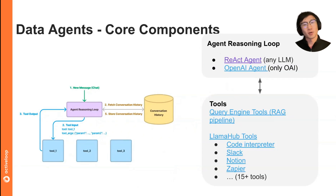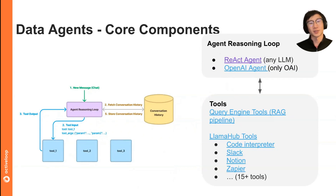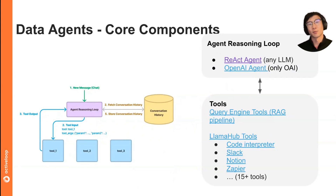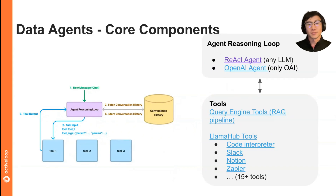The way we think about data agents, the core components are threefold. First is the agent reasoning loop — this could be ReAct, which is a popular chain-of-thought tool-use paradigm, or it could use OpenAI function calling, where you do a while loop through the API to see whether the API wants to call any functions you supply it.